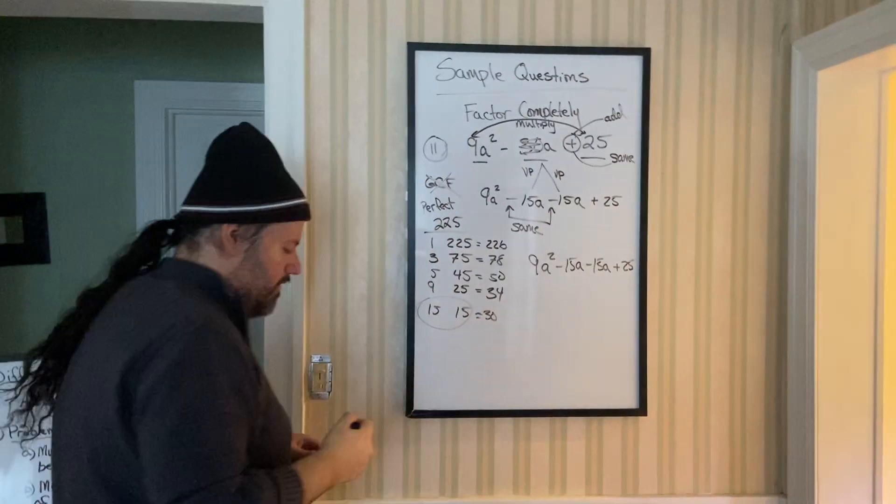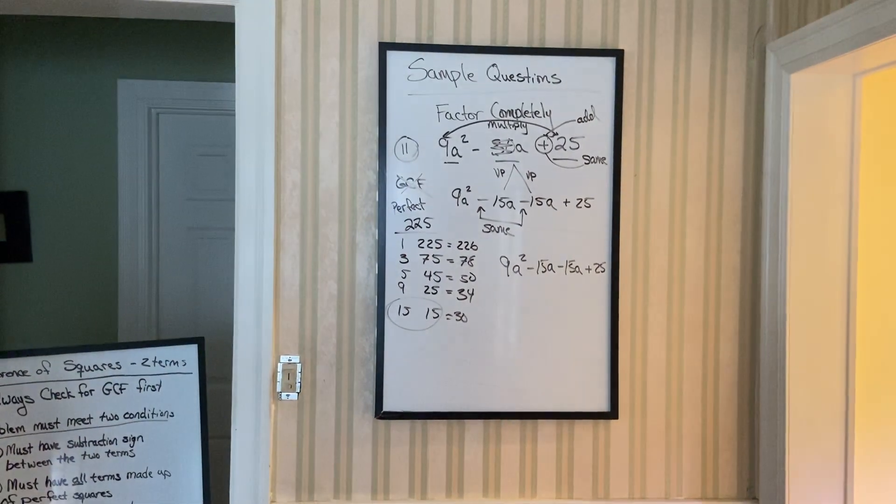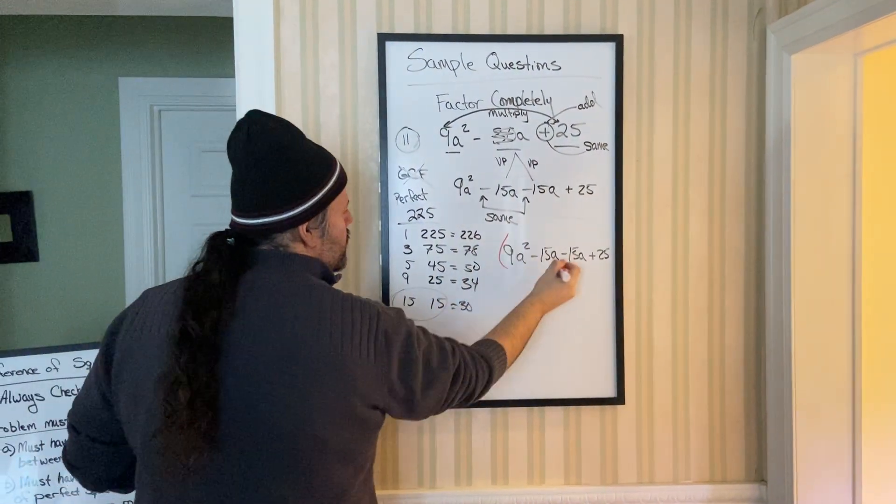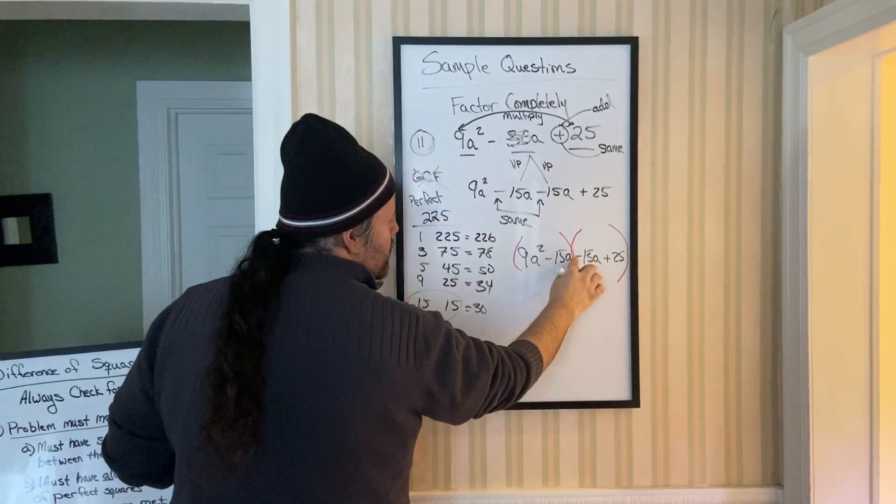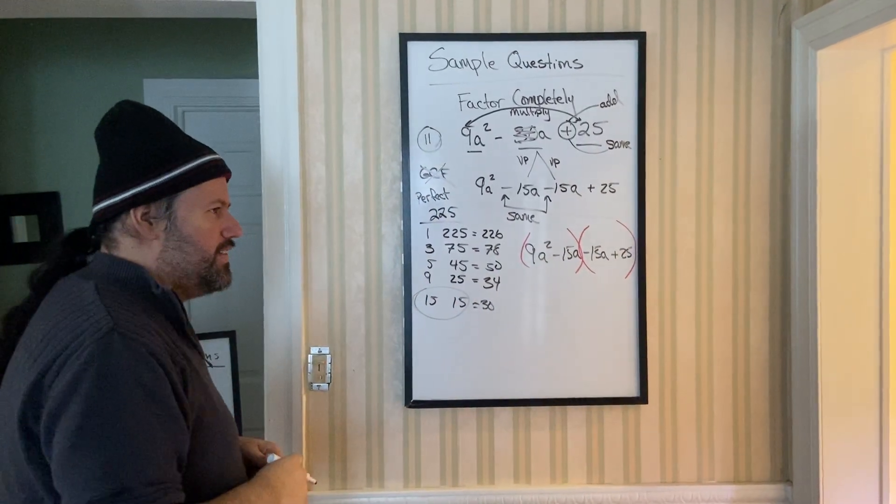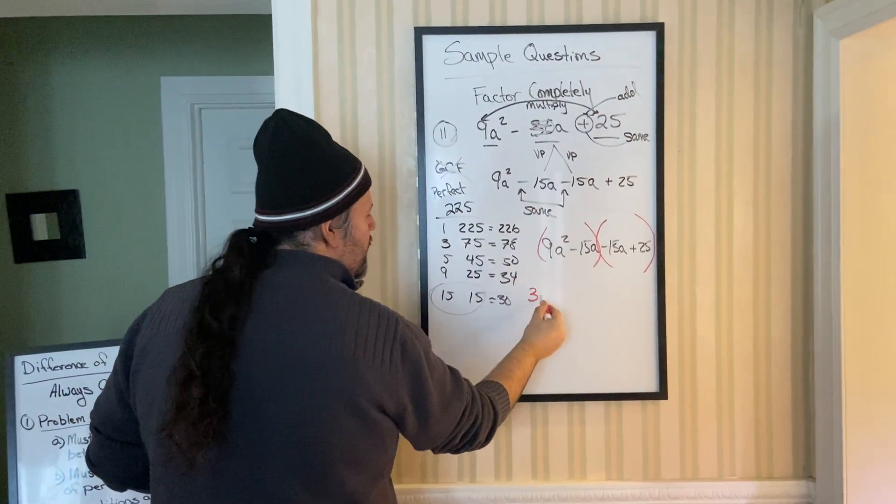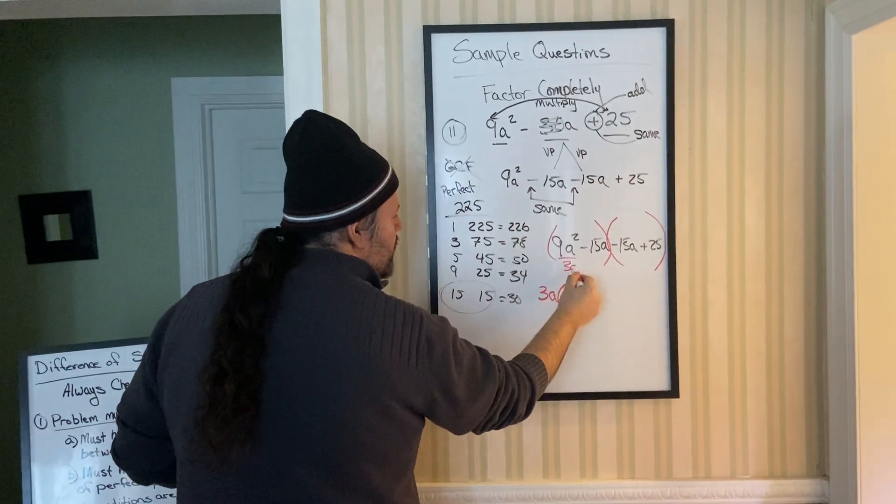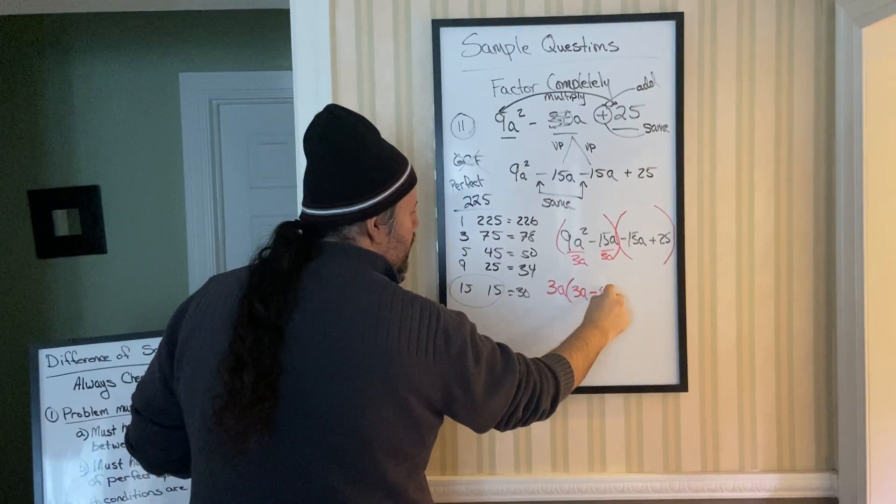So, parentheses around the first two terms, parentheses around the last two terms, include the sign in the second set of parentheses. Here, you can take out a GCF of 3A. So you're left with 3A. Remember, divide each term by 3A. So you're left with 3A minus 5.